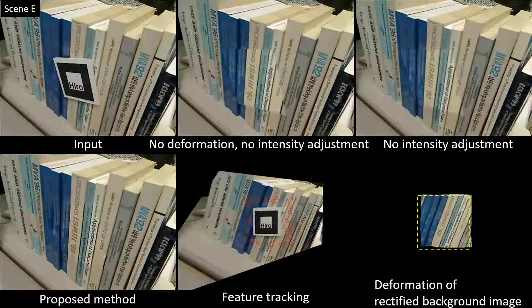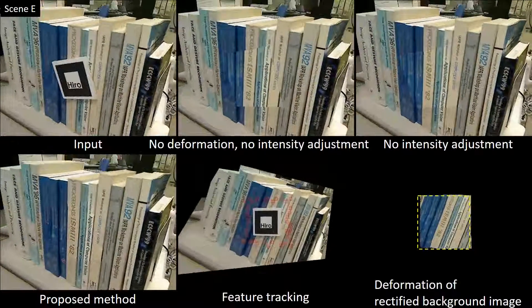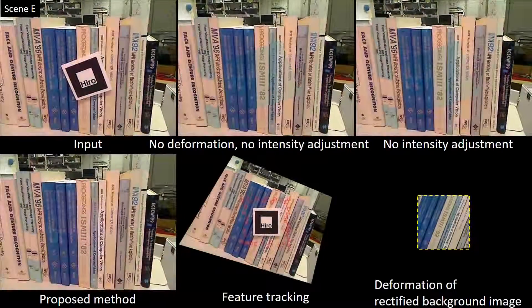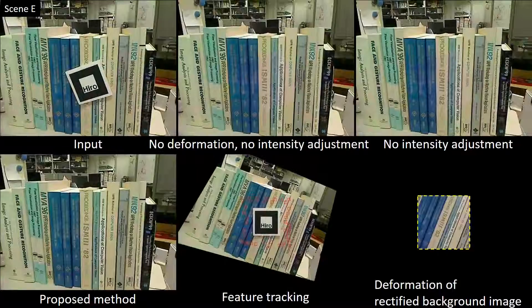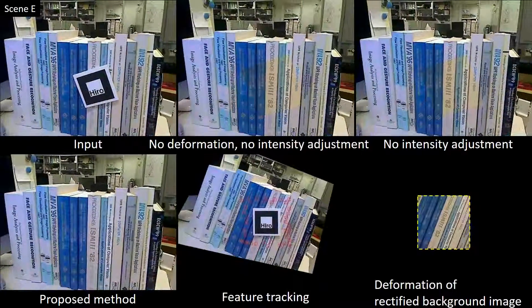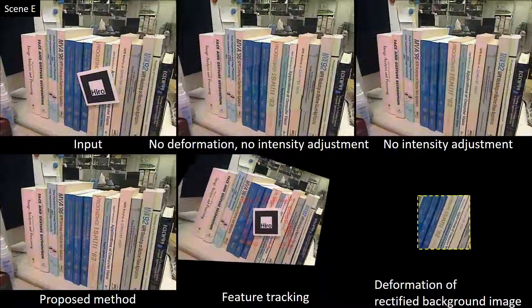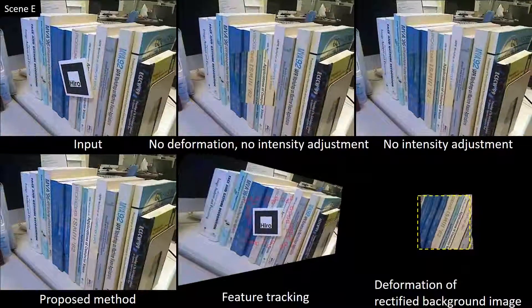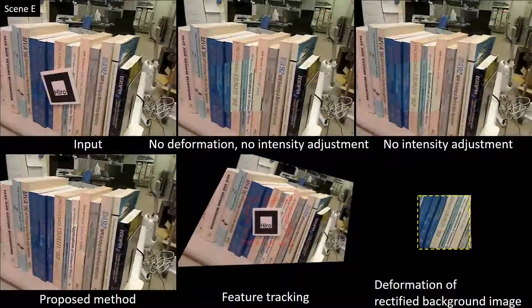In scene E, the marker is placed on an uneven surface on aligned books. In addition, we changed illumination color continuously and moved the camera around. Our method successfully handles the geometric and photometric discontinuities. However, our method cannot reproduce the motion blur that occurs when the camera moves quickly.